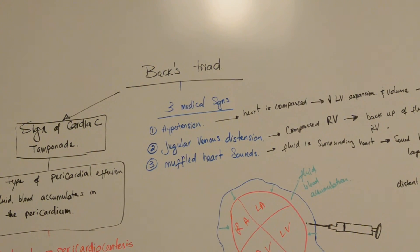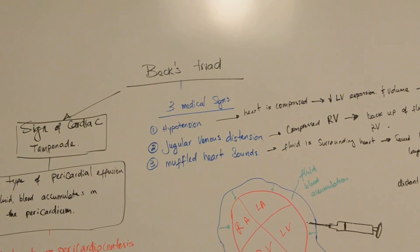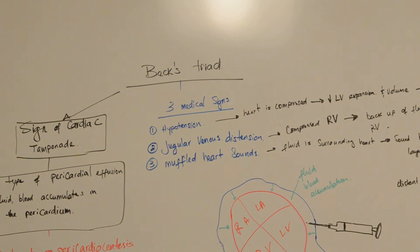So the triad, it's basically there are three medical signs that are associated with cardiac tamponade. These signs are hypotension. Hypotension is low arterial blood pressure.